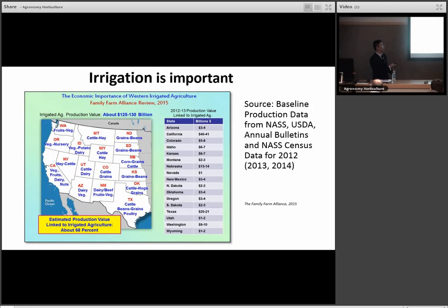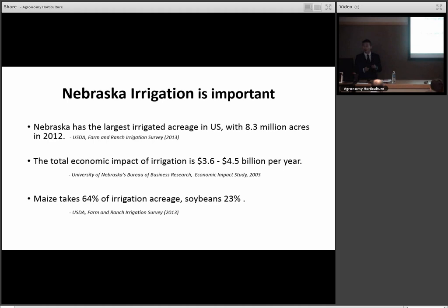Nebraska is the number one nationally irrigated state with 8.3 million acres. The total economic impact is from $3.6 to $6.5 billion per year. Within all that irrigated land, about 64% is corn production and 33% is soybean. So you can see how important irrigation is in Nebraska and what proportion these two major commoditized crops are taking.